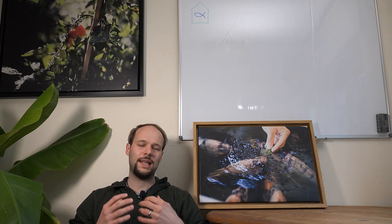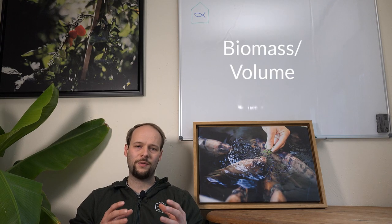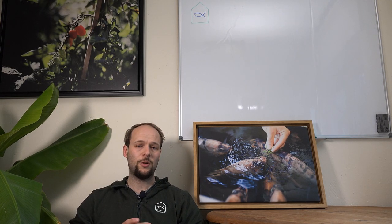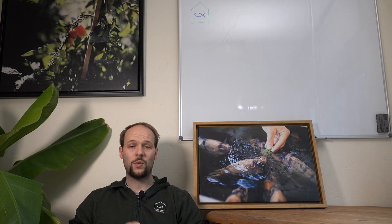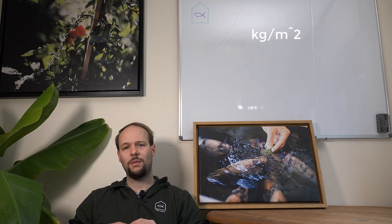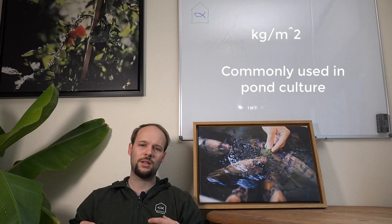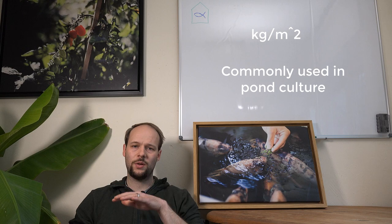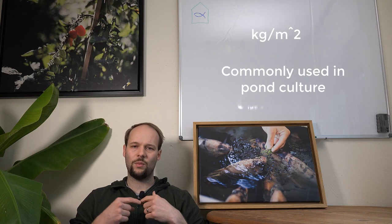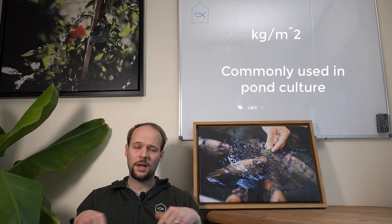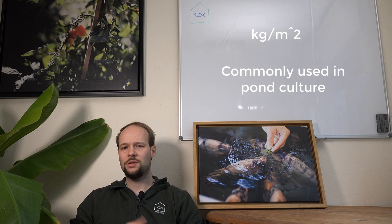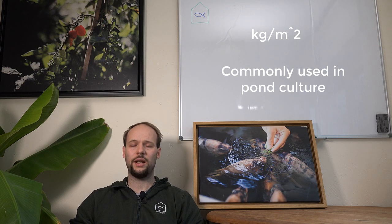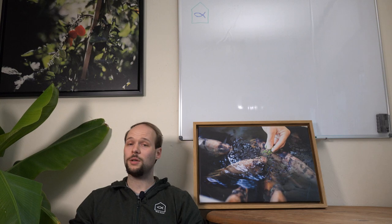The stocking density gives you an indicator of how much biomass of fish is living per volume unit. So it's usually given in kilogram per cubic meter. Sometimes also in kilogram per square meter, but this unit is commonly used in pond culture, and here especially when you culture shrimps. Because shrimp ponds are usually a little bit more shallow than other systems, and that's why it's more important to have the surface area instead of the volume.